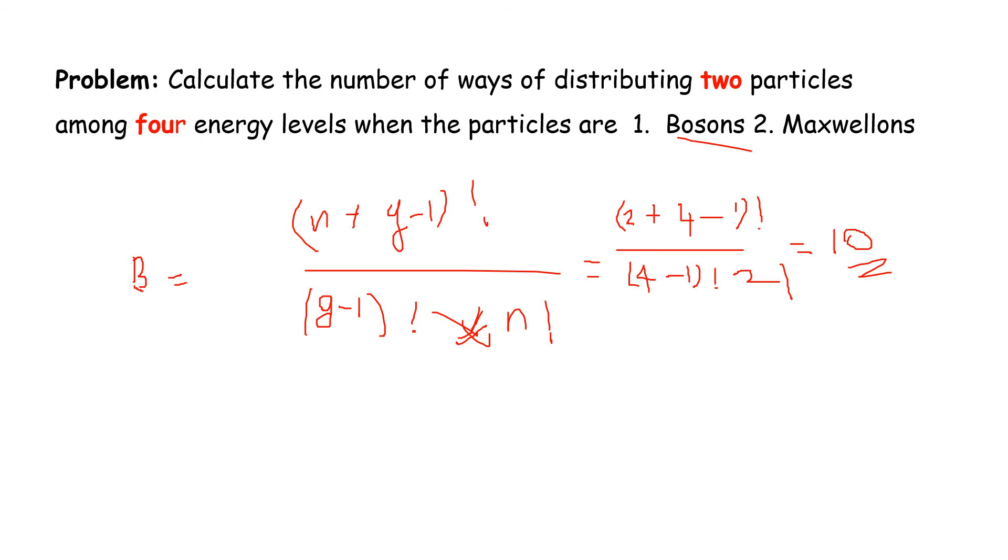Number of ways for Maxwellons: The formula is g to the power n divided by n factorial. Substituting values where n is 2 and g is 4, we get 4 squared divided by 2 factorial. The 2 factorial cancels, leaving 4 squared equals 16. So for Maxwellons the answer is 16, and for bosons it's 10.